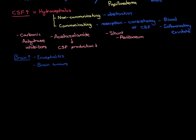We can split brain tumours into two categories: primary brain tumours, which are very rare, and secondary brain tumours, which are more common. Let's start by discussing secondary brain tumours.